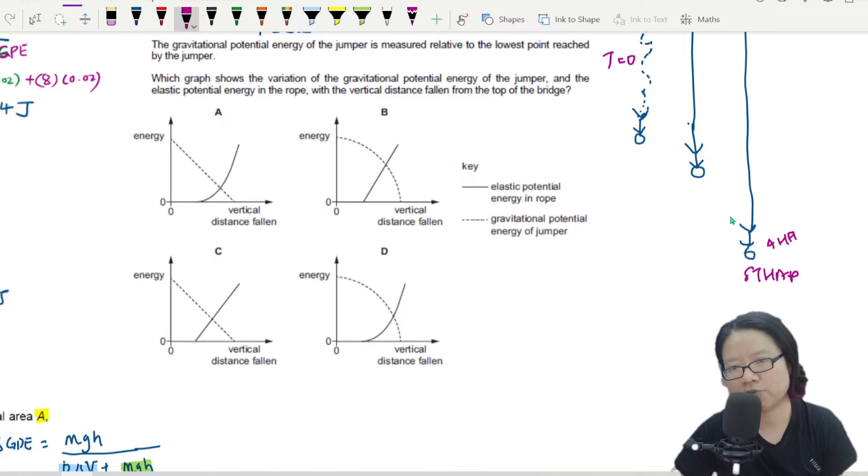Have you met a bungee jumper that doesn't shout? So at this point, when he stops, the velocity is zero. It says here that the GPE of the jumper is always measured relative to the lowest point reached by the jumper. So this is the lowest point. All your GPE is measured from here, basically, from this purple color line.